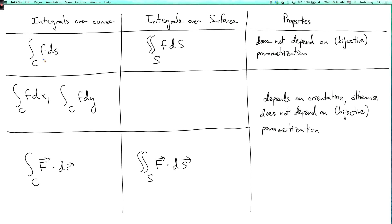First we saw the integration of a function over a curve with respect to arc length. In particular, if you integrate f equals 1, you just get the length of the curve. Similarly, we have the integration with respect to surface area of a function over a surface. And if you integrate the function f equals 1, you just get the area of the surface.